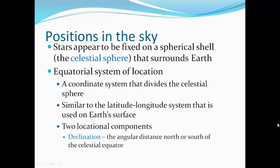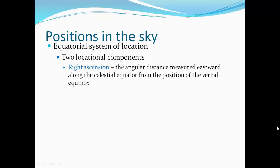The positions in the sky appear to be fixed on a spherical shell, the celestial sphere that surrounds the Earth. That's how far away they actually are. They just kind of all look like they're the same distance. There's the equatorial system of locating these stars and constellations on that sphere. So we developed a coordinate system similar to Earth's latitude and longitude. The coordinate system divides the celestial sphere. There are two locational components.